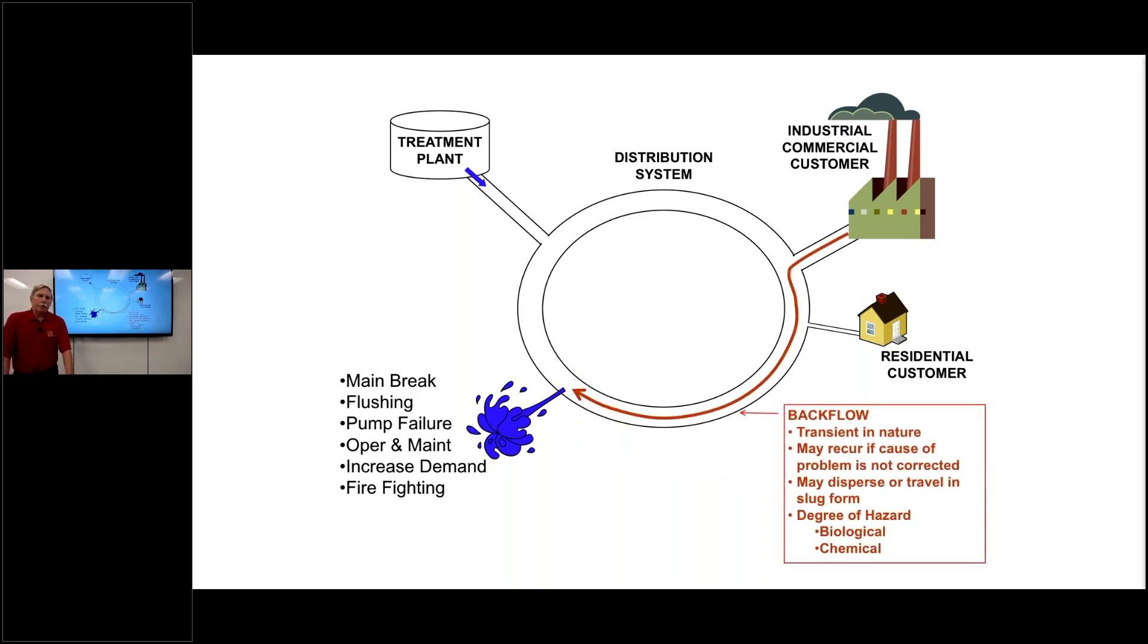Now, in discussing the actual subject of the backflow, the difficulty is we know that backflow is very transient in nature. It could be here one day and gone the next. It can recur. So if the actual conditions reoccur in a similar fashion, that backflow could happen again. So this is the difficulty we have in tracing backflow events. After the actual backflow has occurred, pollutional or contaminational hazards have entered the distribution system, identifying where they came from is a huge task in trying to isolate and identify that. So if it does reoccur, it may be because the actual hazard was not prevented.